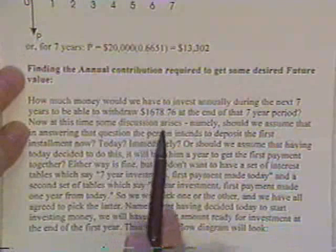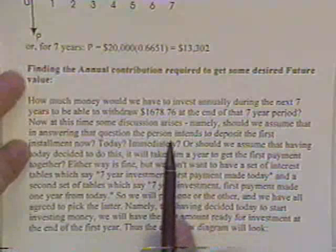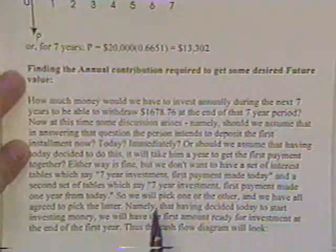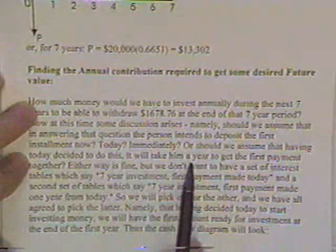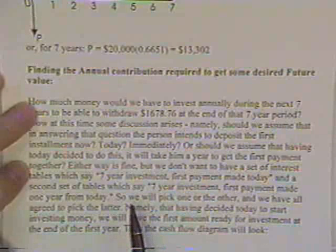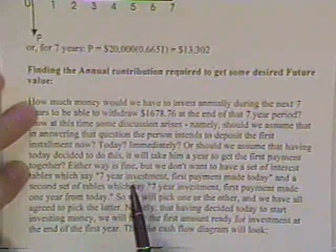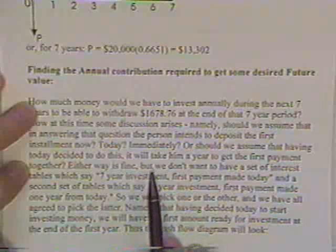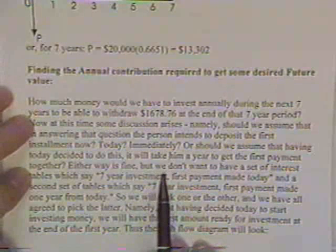This always raises some problems because some people say, should we assume that the person is going to run right down to the bank with the money right now and make the first deposit today immediately, or should we assume that having decided to do this now, it's going to take a year to get that first payment together? It really doesn't matter. You could set up the interest rules by either saying we're going to put the first amount of money in the bank today, or it'll take us a year to get the money together. It doesn't matter, but we're going to have to come up with some agreement.